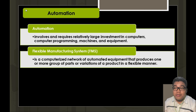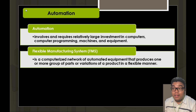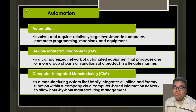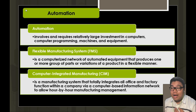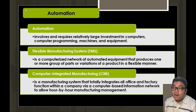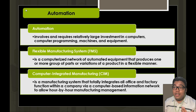A flexible manufacturing system is a computerized network of automated equipment that produces one or more groups of parts or variations of a product in a flexible manner. This type of equipment can perform different tasks alternatively, so procurement of machines specifically intended for each single task is no longer required. Computer-integrated manufacturing is a system that totally integrates all office and factory functions within a company via a computer-based information network, allowing hour-by-hour manufacturing management and oversight of the entire operations through a computer system.